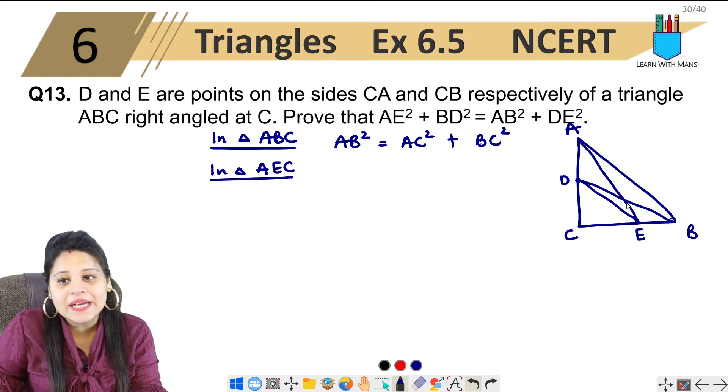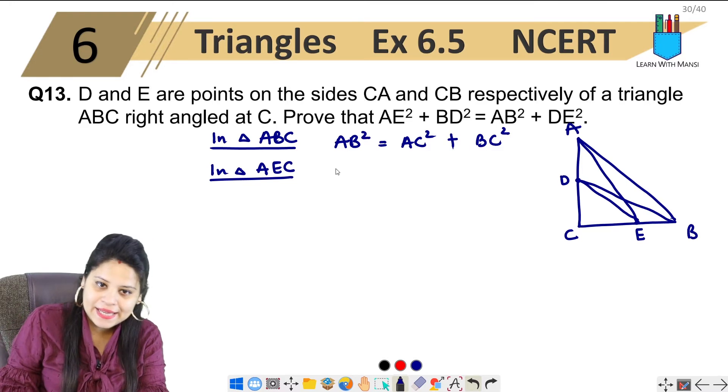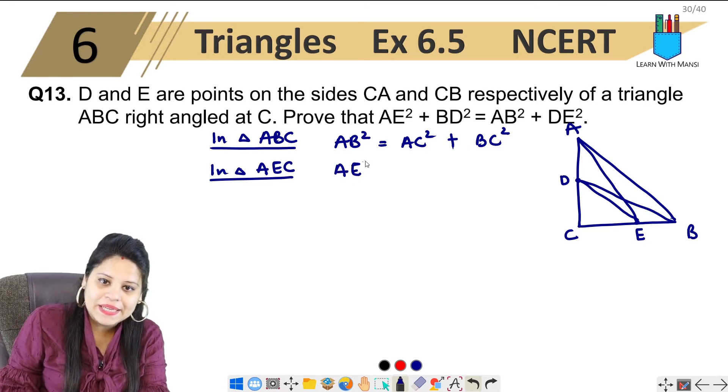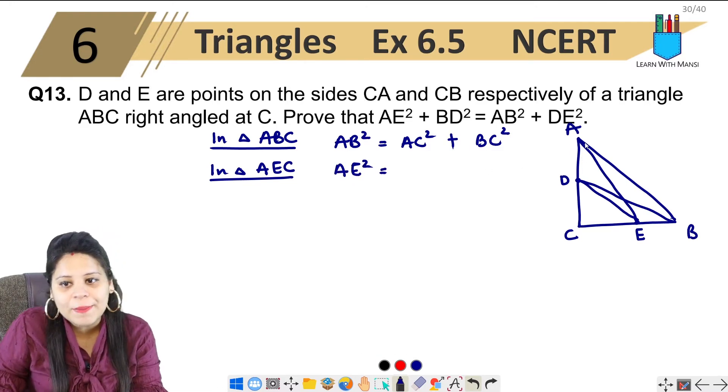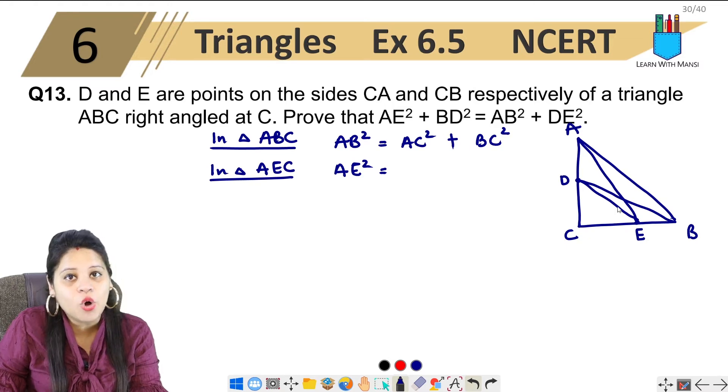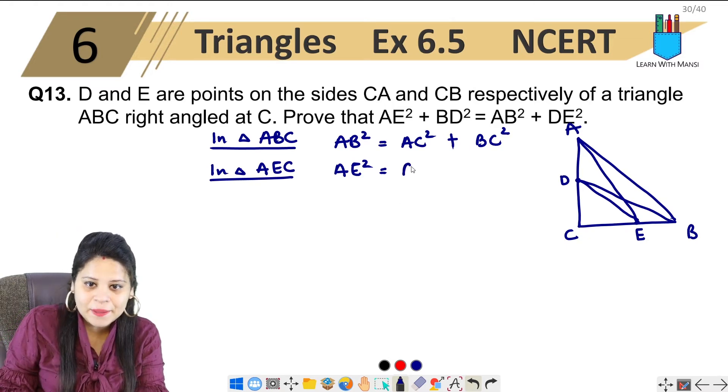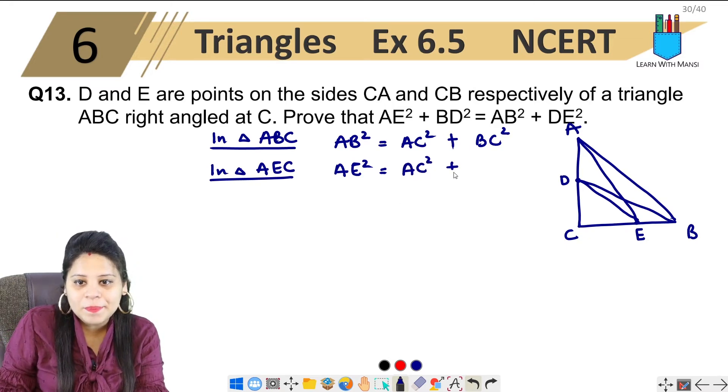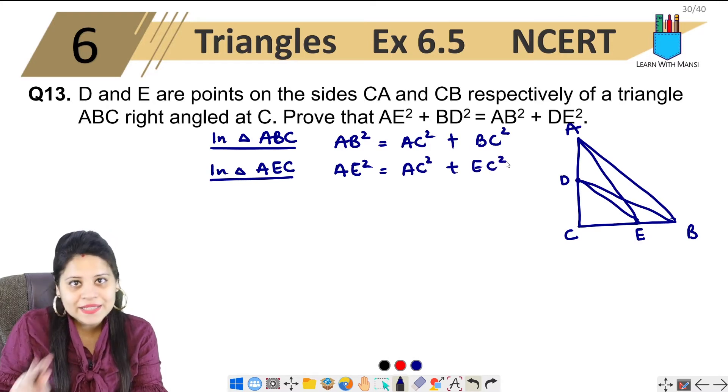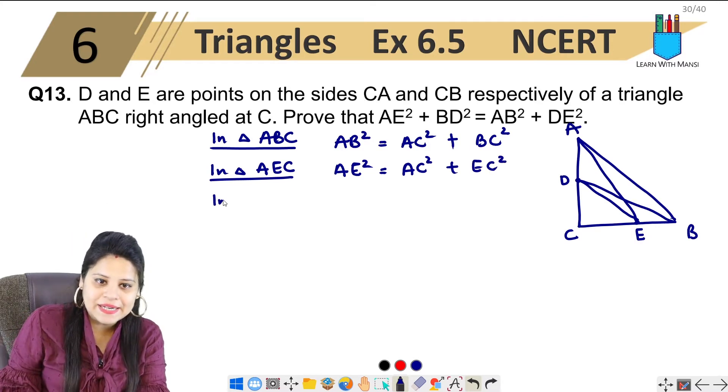Similarly, let's take triangle AEC. So if we talk about AEC, what is hypotenuse in this triangle? AE, that means AE square will be equal to the two sides AC and EC. So that means AC square plus EC square. Clear? Here there are two triangles.